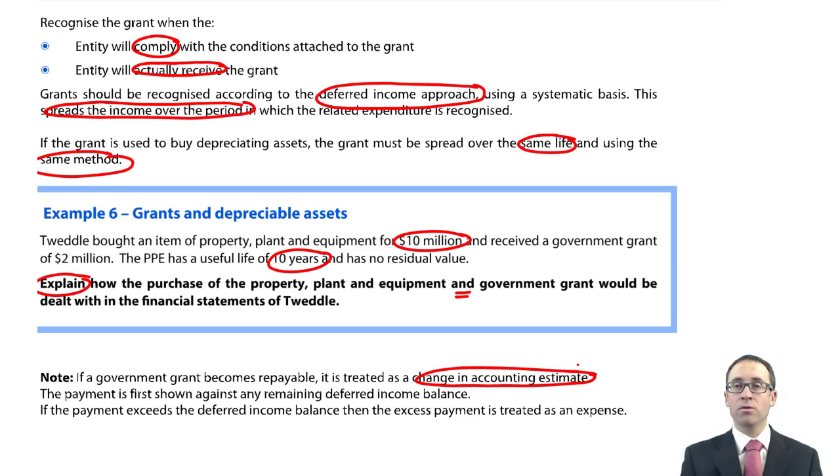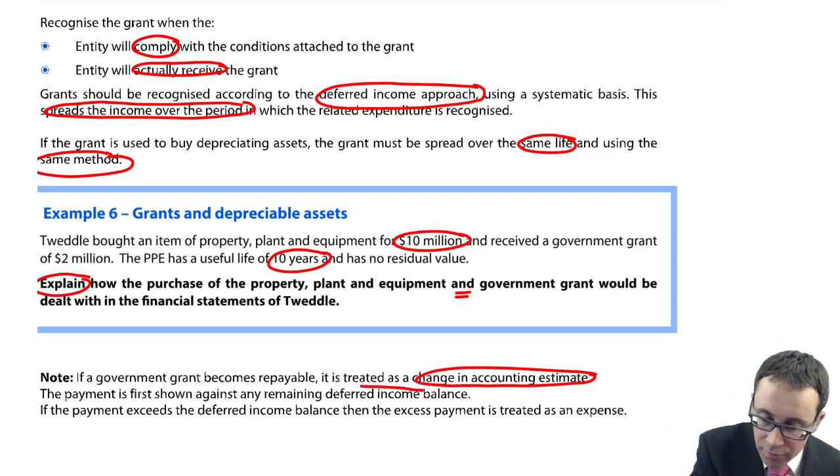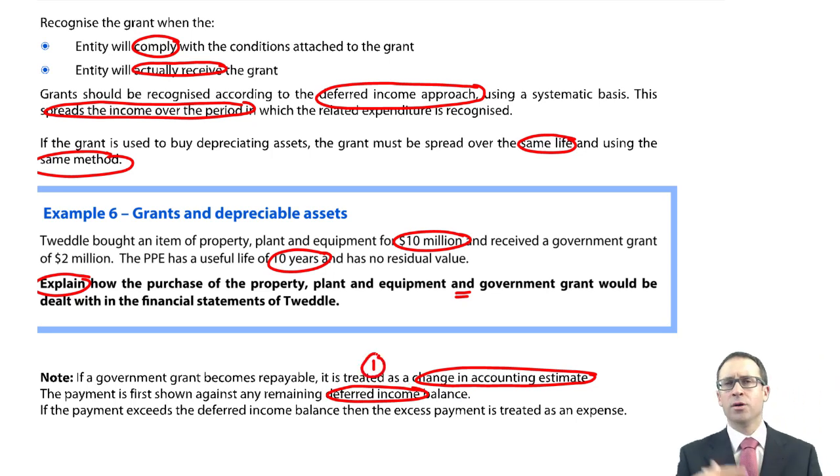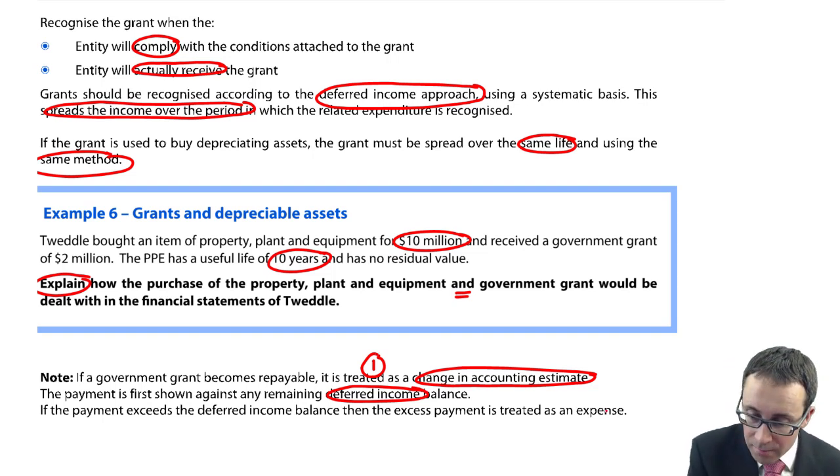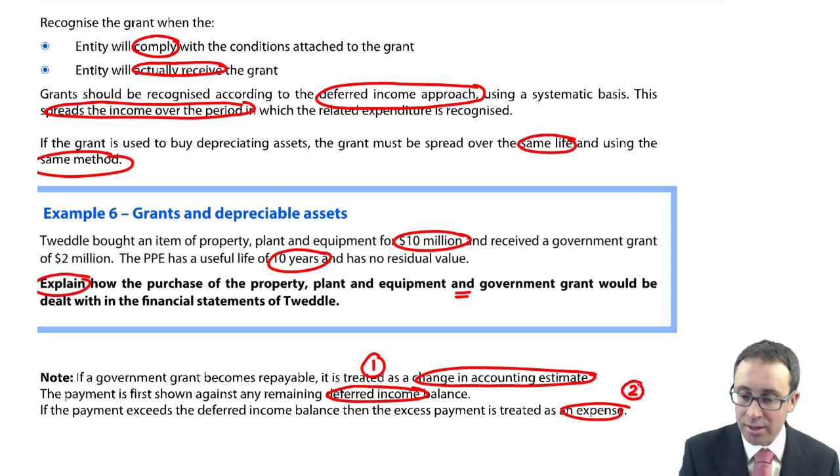If you like change in policy, it's just a change in estimates. And what you do there is you make the repayment. So you credit the bank. And then firstly, you go against your deferred income balance. So that's what you would do first of all. So credit bank, debit deferred income. If there is insufficient deferred income, then the remainder of the debit is just taken as an expense. So credit bank, debit deferred income, debit profit or loss as an expense.